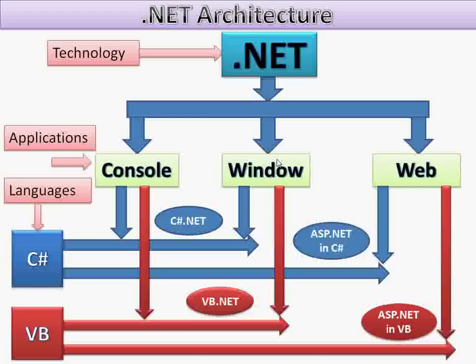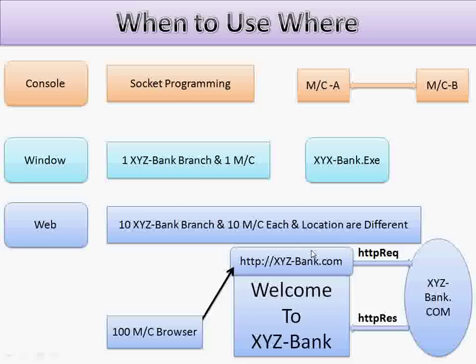A window based application is a standalone application - a machine to machine application, meaning you have to install your software on that particular machine. A web application means we are creating dynamic websites, so ASP.NET allows you to create dynamic websites. Console based application is used for socket programming - machine to machine communication. If there is a requirement for socket programming in .NET, they will go for console based application because it doesn't contain any user interface.